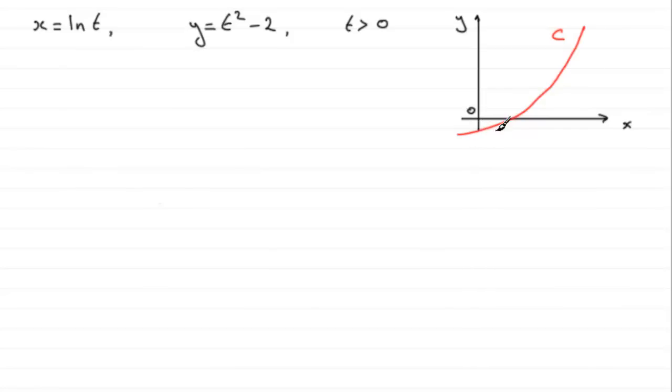So how do we do this? Well, we'll number these equations, say 1 and 2, so we can reference them. We make t the subject from one of them and substitute it into the other, and that will give us an equation for y in terms of x. So which equation do I pick, which is the easiest to work with?